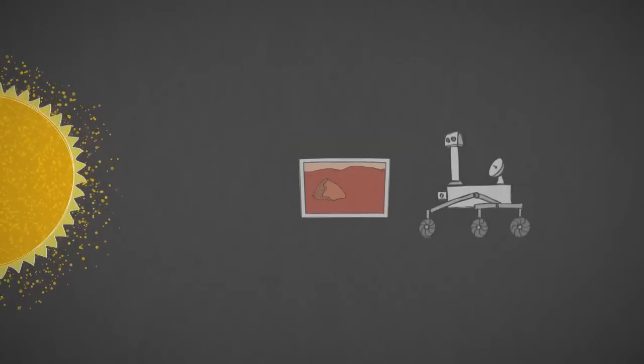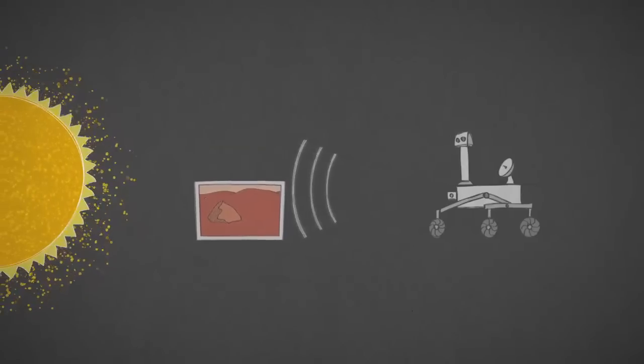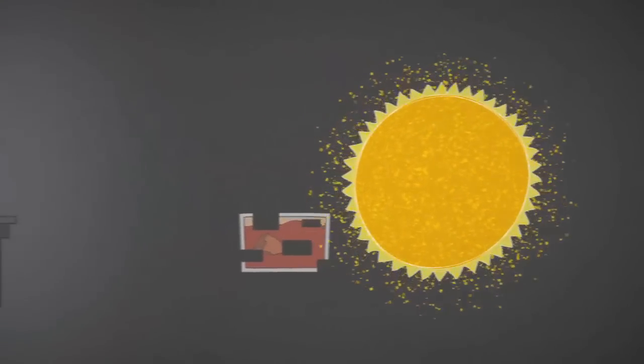If our spacecraft send back signals, charged particles from the Sun could interfere, causing gaps in the data that reach us.